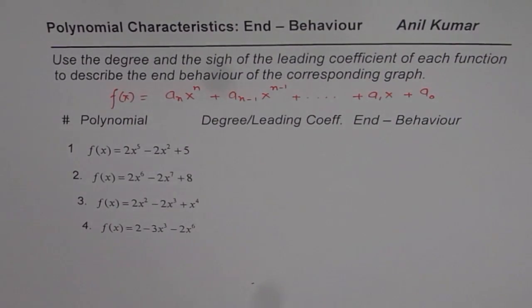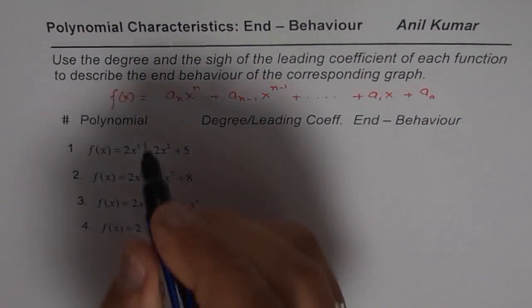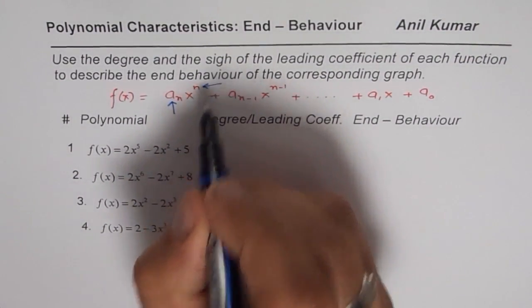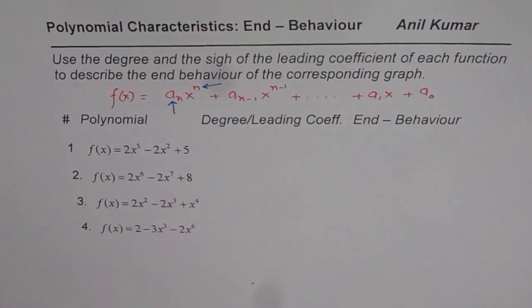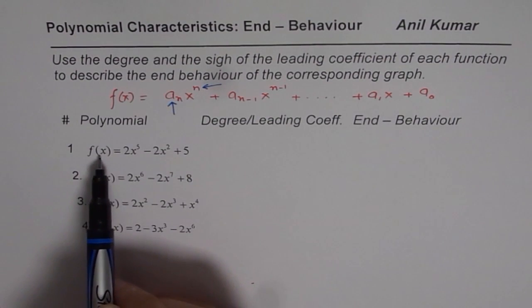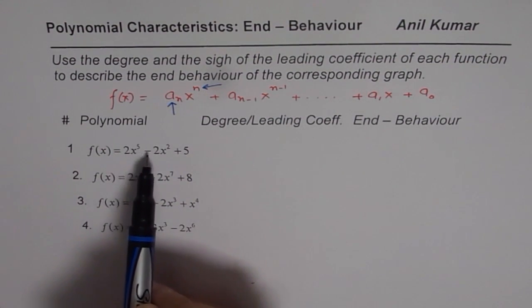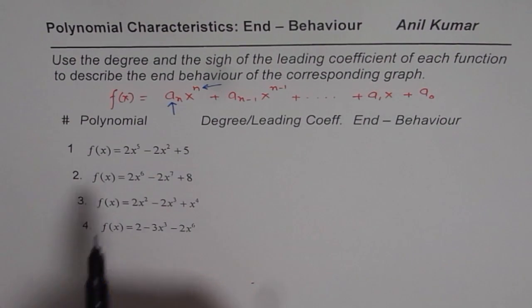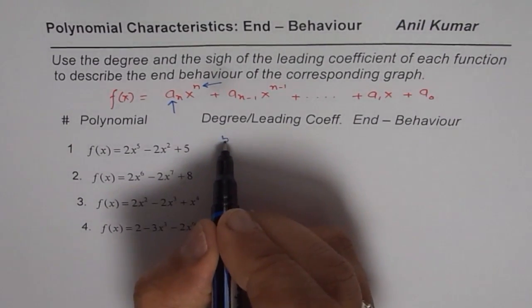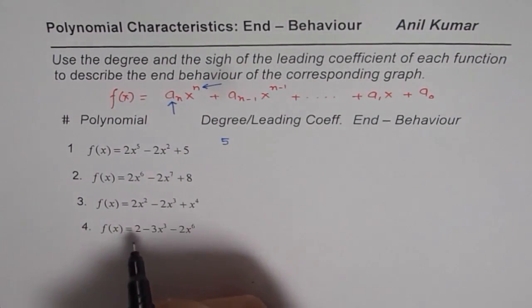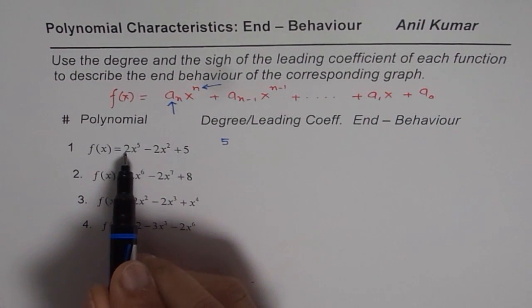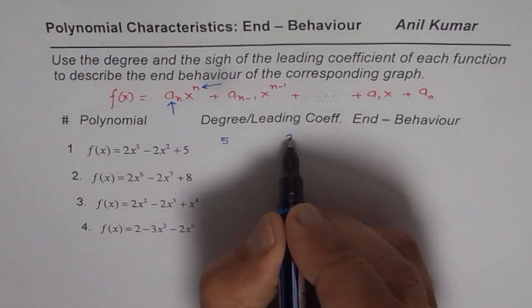What we are really interested in finding out is two things: the leading coefficient Aₙ and the degree. Let's go through these polynomial equations. The first one is f(x) = 2x⁵ − 2x² + 5. The highest degree is 5, so the degree is 5. The leading coefficient is associated with the term which has the highest degree, so here the leading coefficient is 2.